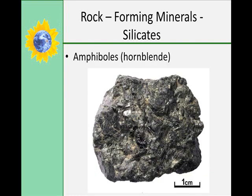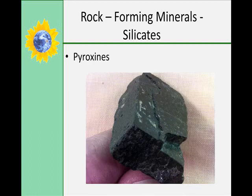Amphiboles, including Hornblende, are another important rock-forming mineral that are also silicate. They are dark in color and are called ferromagnesian silicates because they contain both iron and magnesium. This here is Hornblende. Pyroxenes are shorter crystals than amphiboles but look very similar to amphiboles and Hornblende.